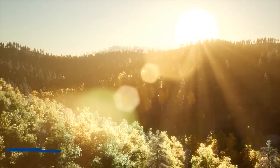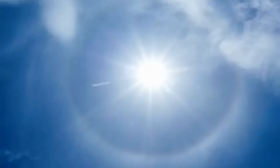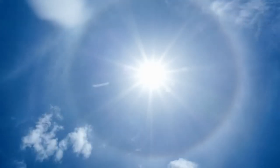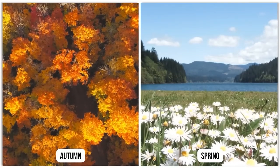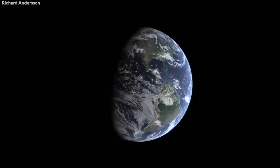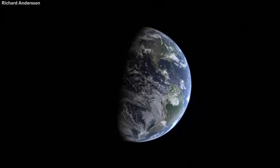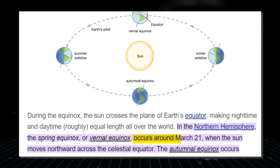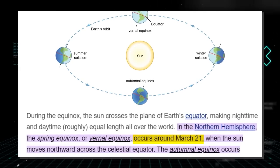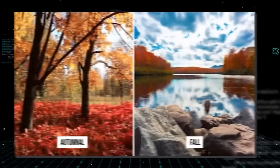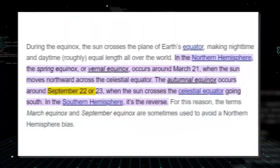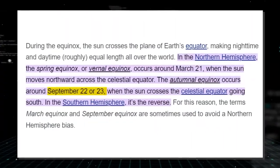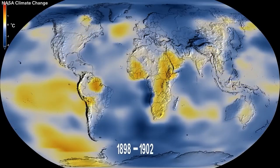Summer officially begins on June 20th or 21st — the summer solstice, which has the most daylight of the year. Spring and autumn begin on equinoxes, which are days with equal amounts of daylight and darkness. The vernal or spring equinox occurs on March 20th or 21st, with the autumnal or fall equinox occurring on September 22nd or 23rd.